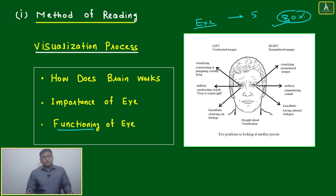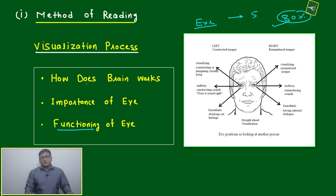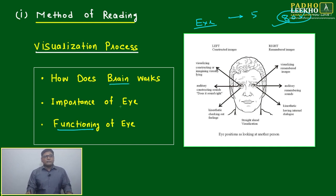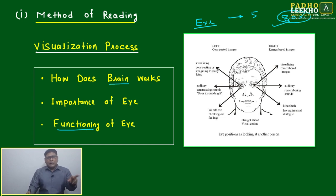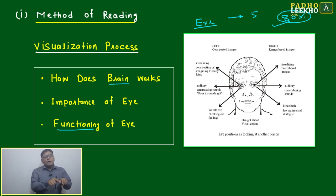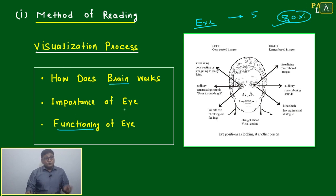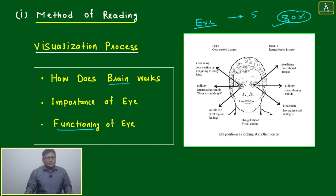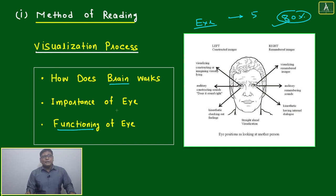We have to think about how the brain works — how the brain is processing information. We know laptops and desktops use a binary system: zero and one. If you want to put anything into a computer system, you have to use the binary system. Similarly, you must know how the brain works, what the language of the brain is, and how it processes information.